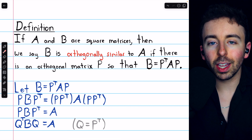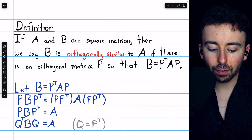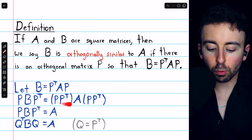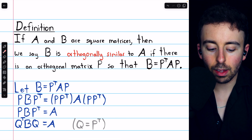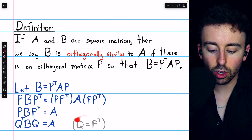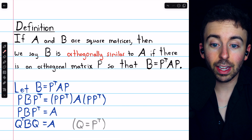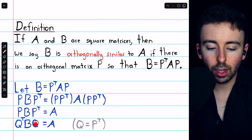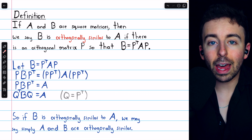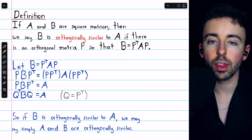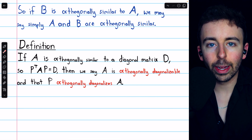Just as with ordinary similarity, this relationship is symmetric. If B is orthogonally similar to A, we can multiply on the left by P and on the right by P transpose. Doing so cancels the P transpose and P on the right side, giving P B P transpose equals A. Letting Q equal P transpose, we get Q transpose times B times Q equals A, and since P is orthogonal, so too is P transpose, which is Q. So if B is orthogonally similar to A, then A is also orthogonally similar to B, and we may simply say that A and B are orthogonally similar.